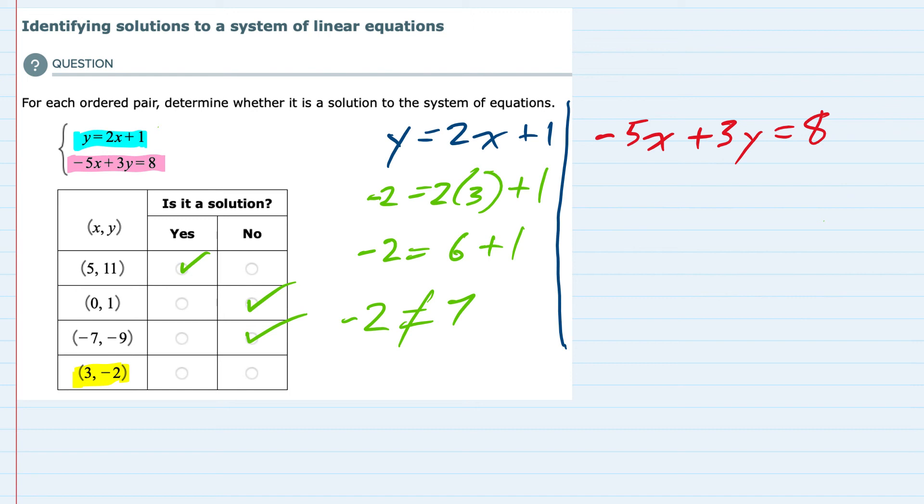So again, since this failed, we can already say no. It is not a solution. The only way to check the yes box is for that point to work in both equations. And that only happened with 5 and 11 for this example.